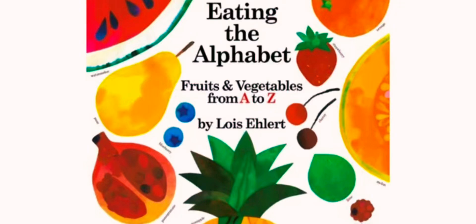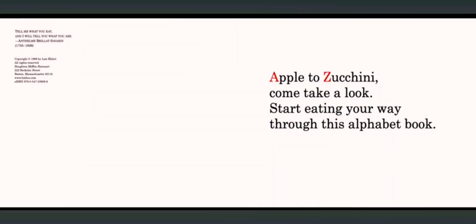Eating the Alphabet: Fruits and Vegetables from A to Z by Lois Ehlert. Apple to Zucchini — come take a look. Start eating your way through this alphabet book.